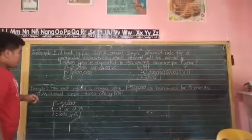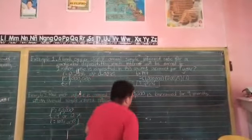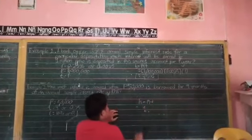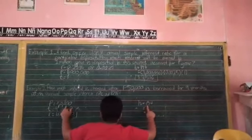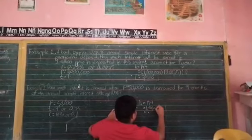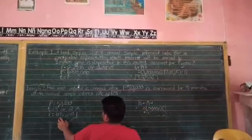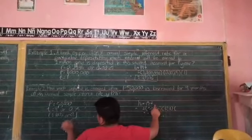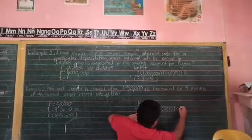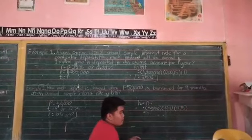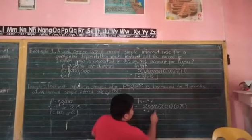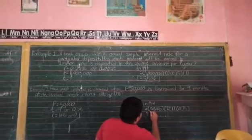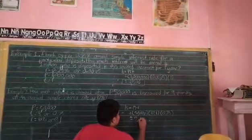So we need to use our formula to get the final answer. Our formula is I sub S equals PRT. We write our principal which is 50,000, the rate which is 0.1, and our time which is 0.75. So we multiply 50,000 times 0.1 times 0.75. The answer is 3,750. This is the final answer for example number 2.